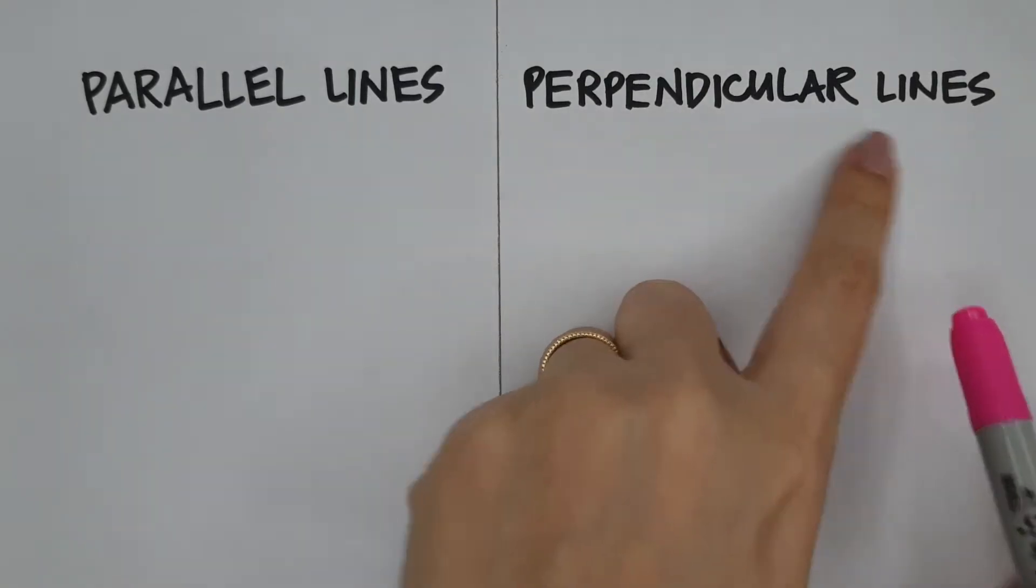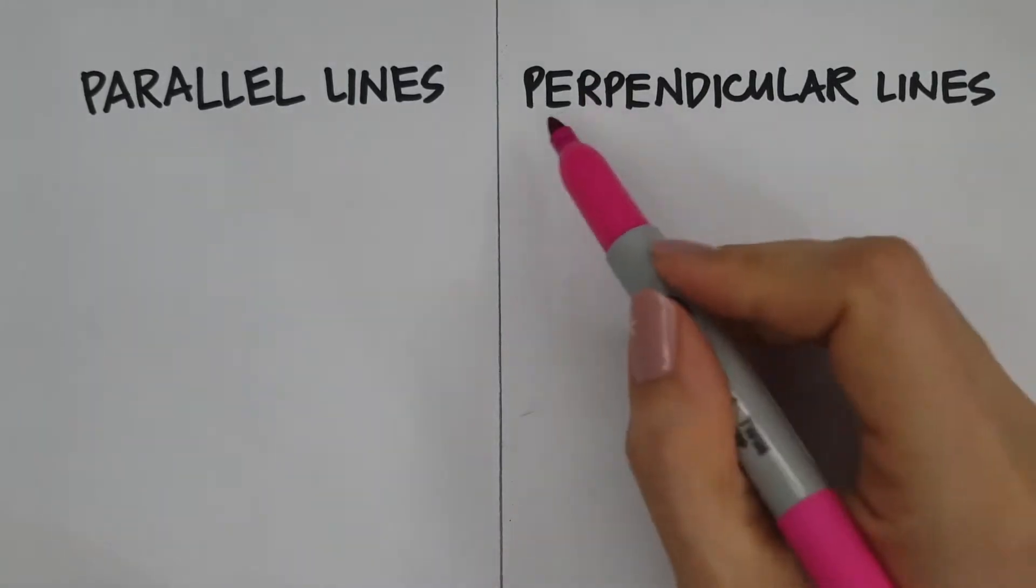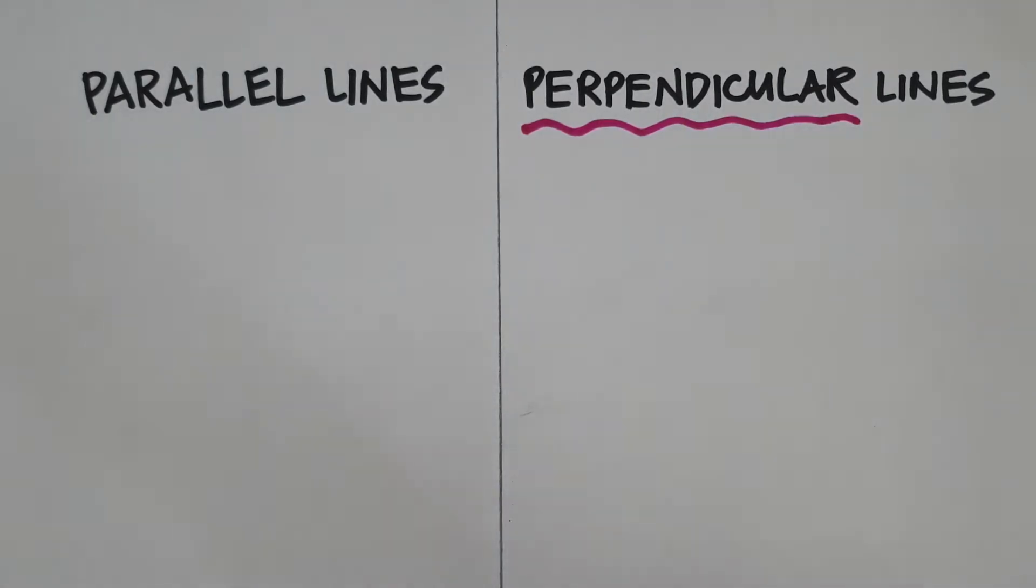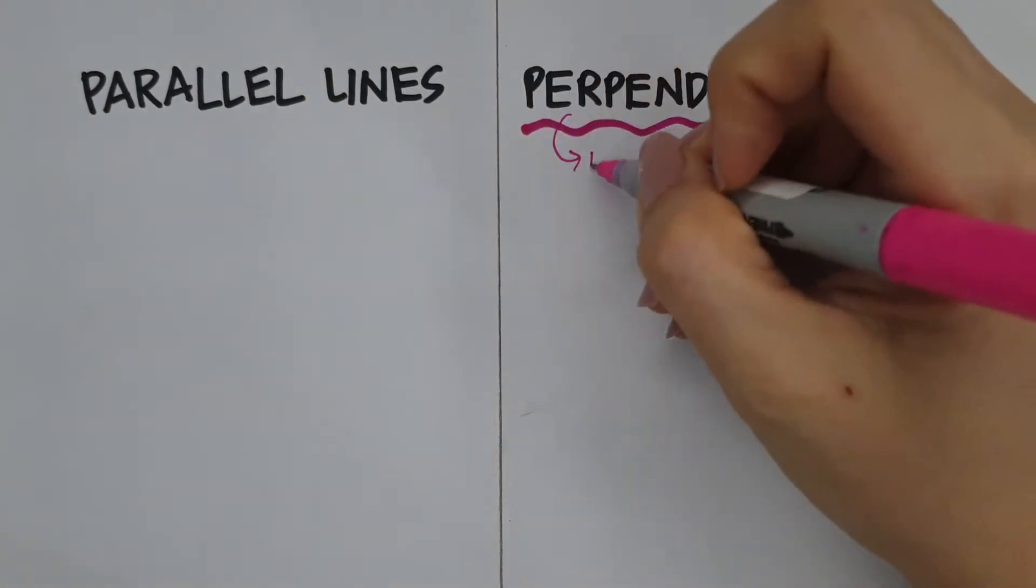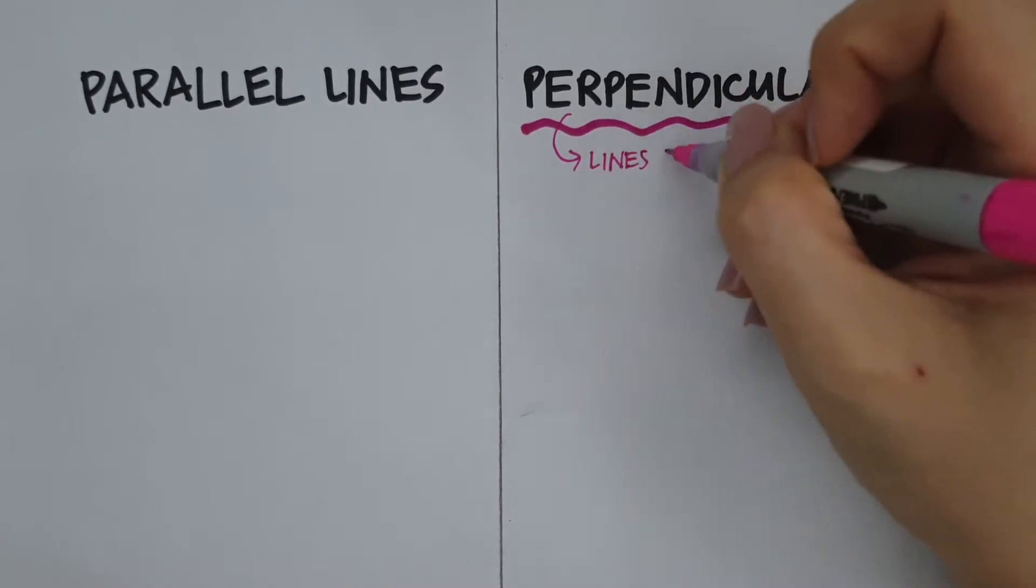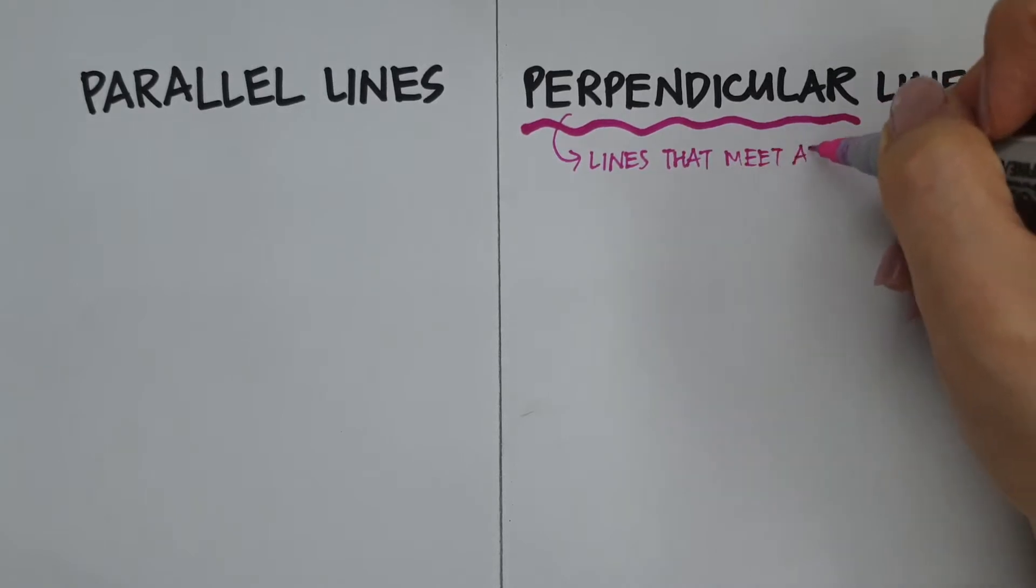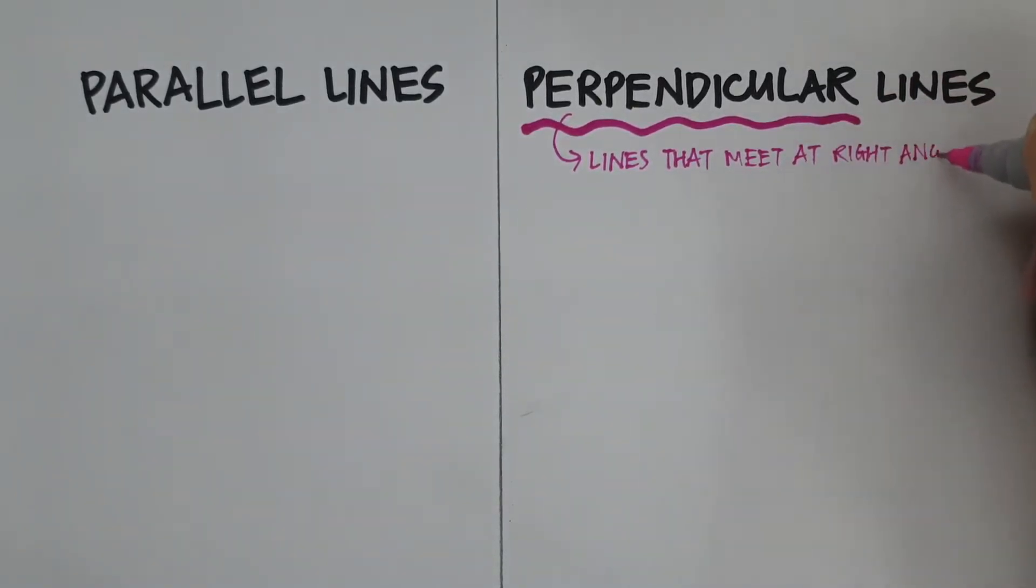For perpendicular lines, what are they? They are lines that, can you remember? Lines that meet at right angles. What is right angles? It's 90 degrees.